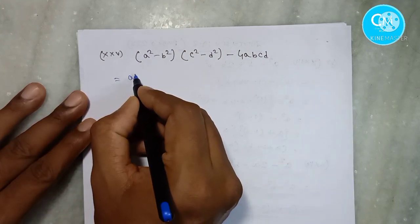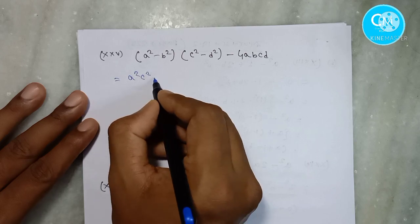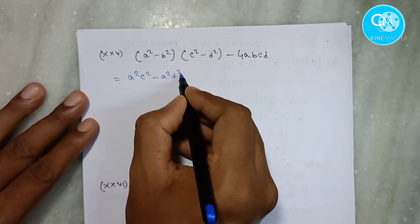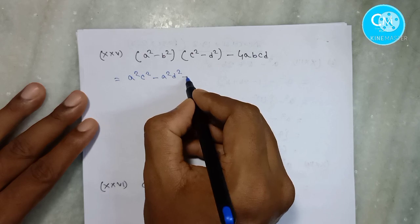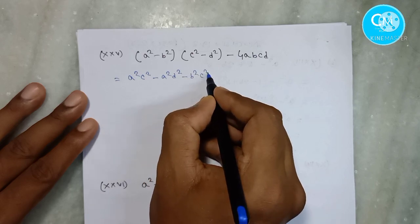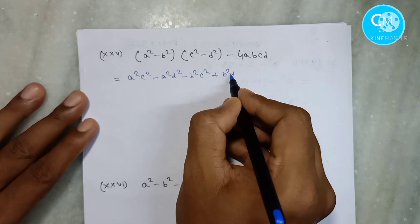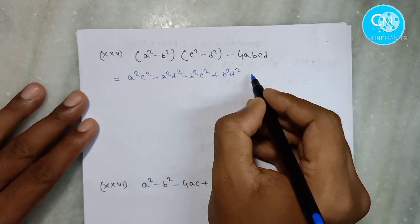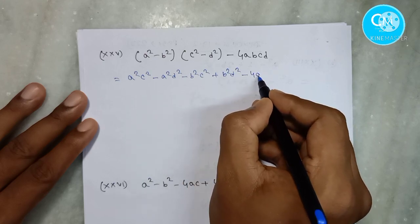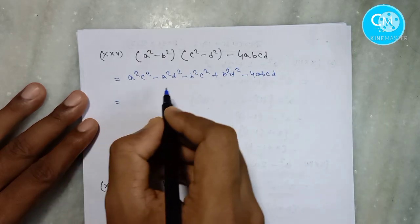A square, C square minus A square, D square minus B square, C square plus B square, D square minus 4A, B, C, D.